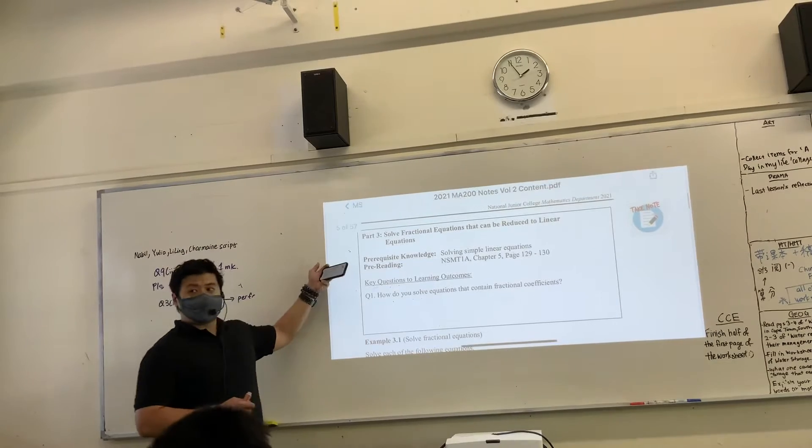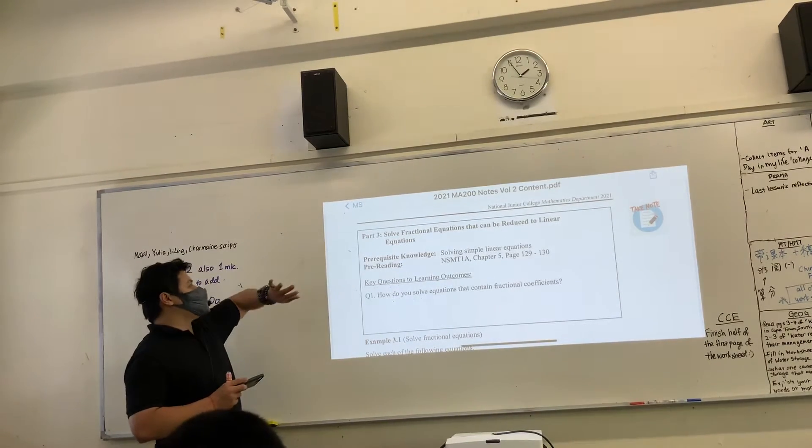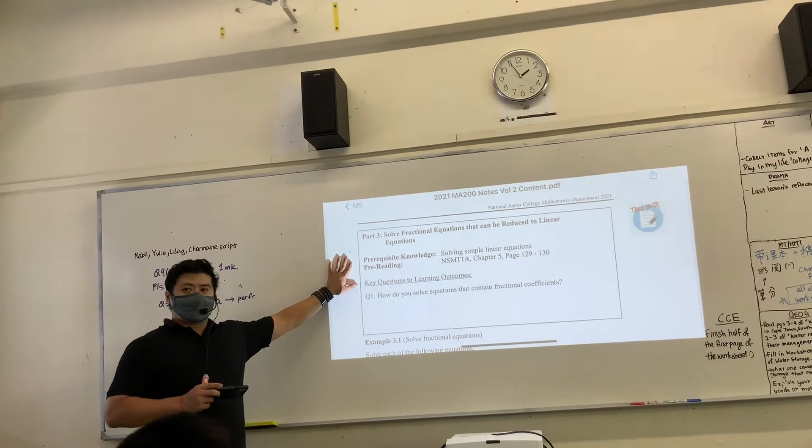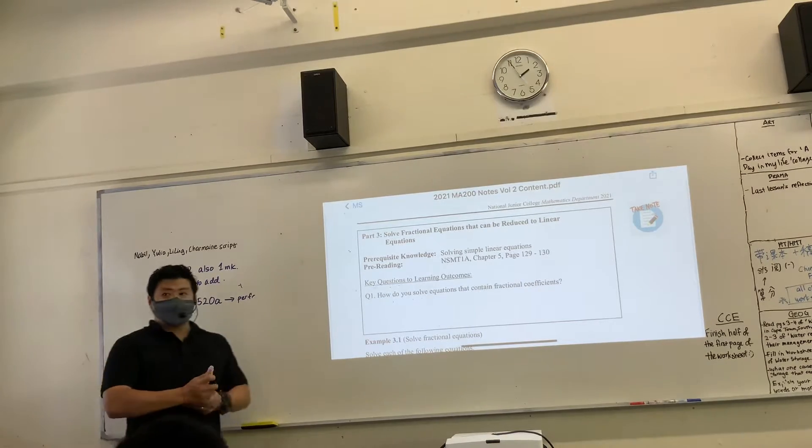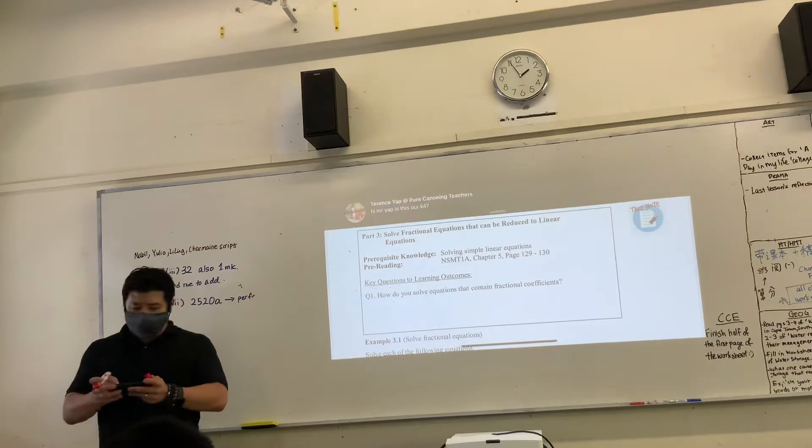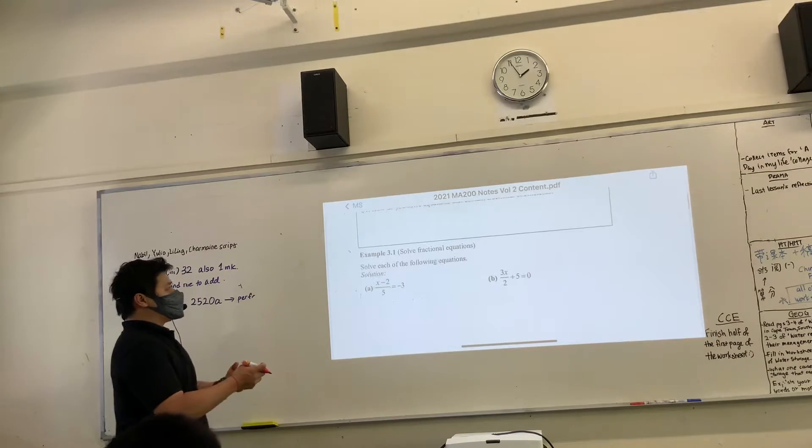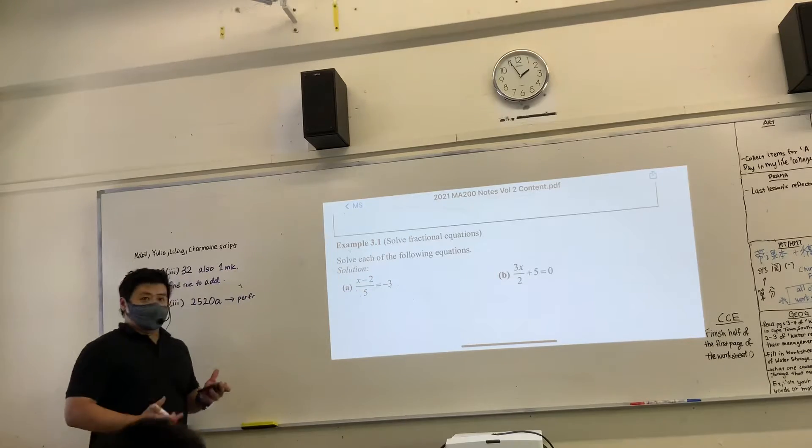We have finished part 2 last time. So now we are going to part 3 where we look at fractional equations that can be reduced to linear equations. Fractional equations are basically when your variables are stuck in fractions. You can see an example like this. How do we try to solve an equation like this?